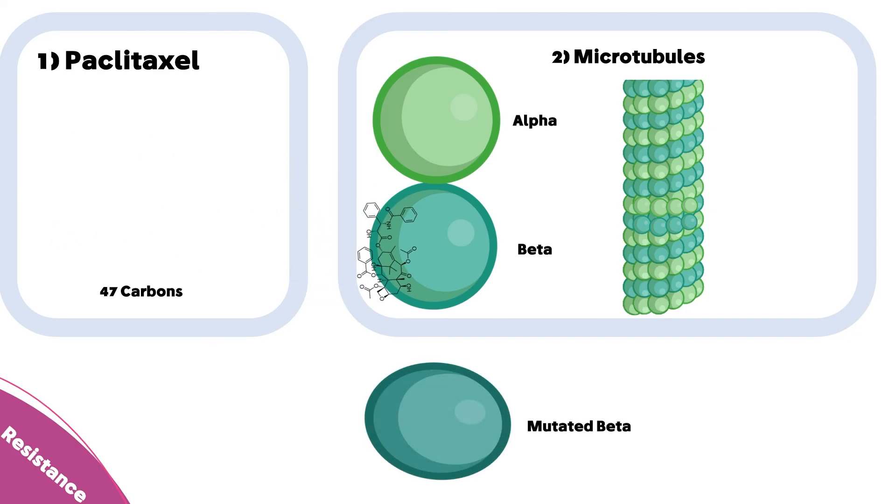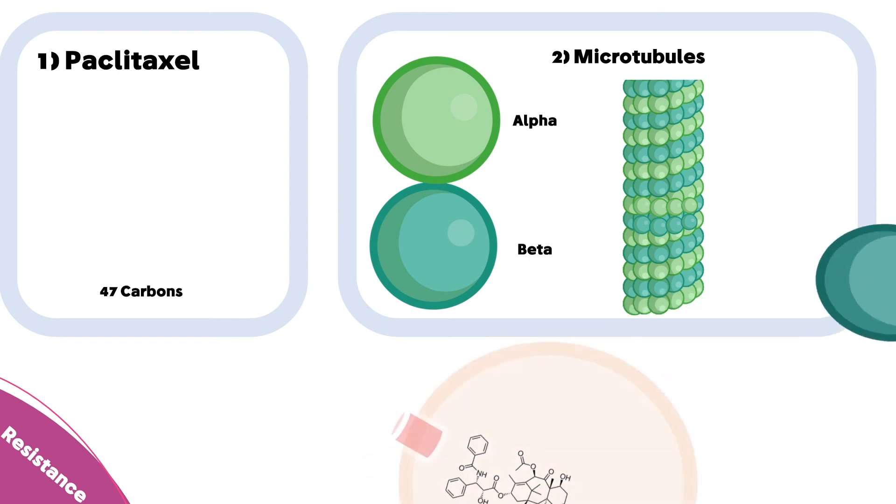Now let's move to the mechanisms by which cancer cells can resist paclitaxel. The first mechanism is the beta subunit mutation; this mutated version of beta subunit does not firmly bind with paclitaxel. The second type of resistance is through the excretion of paclitaxel out of the cell via the upregulation of a transporter called ABC transporter.